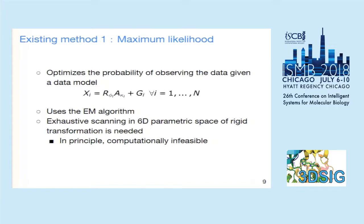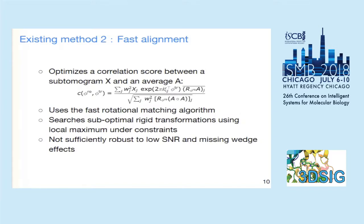In practice, adaptive oversampling is used, but this may degenerate the search to a local maximum instead of a global maximum. The second approach is the fast alignment based method, which optimizes a correlation score between a subtomogram X and the average A. The correlation score is essentially a Pearson correlation defined in Fourier space. This is done using the fast rotational matching algorithm, which searches suboptimal rigid transformations using local maxima under constraints. This method is fast but not very robust to low signal-to-noise ratio and missing wedge effects.